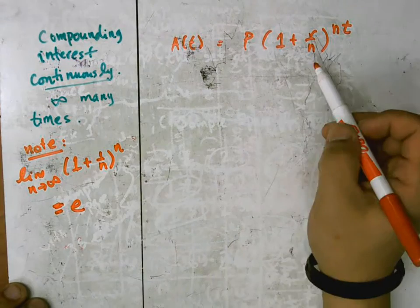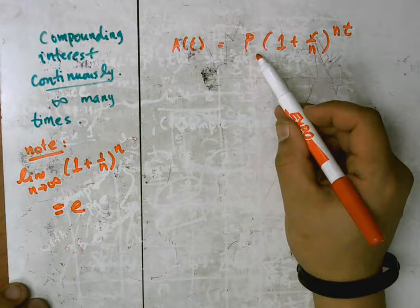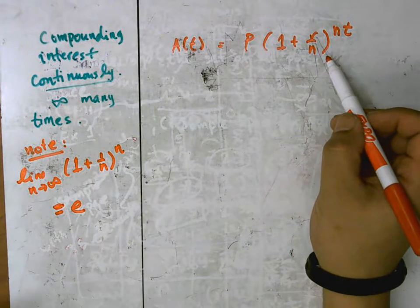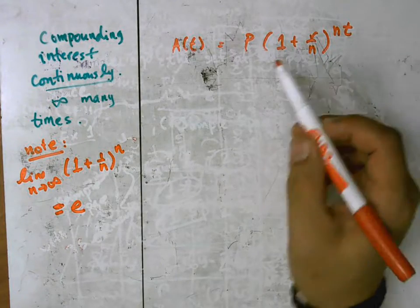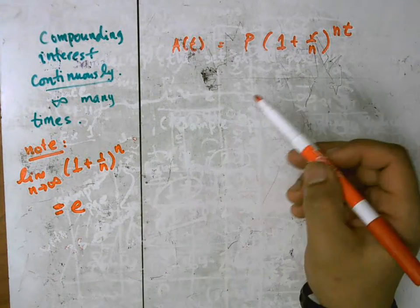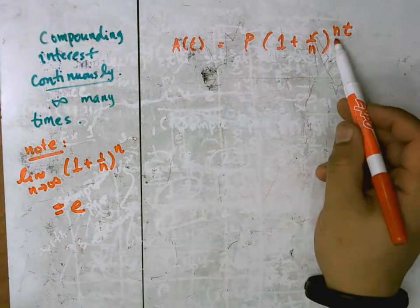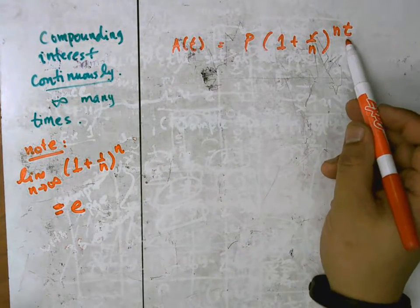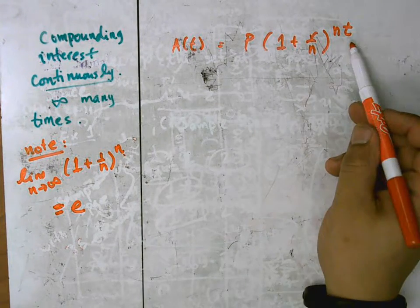So somehow, you can see here, this expression looks like e. I mean, it seems almost the same. Instead of 1 here, you have r, and instead of n up here, you have nt.